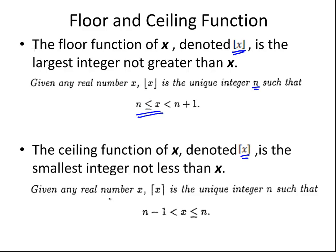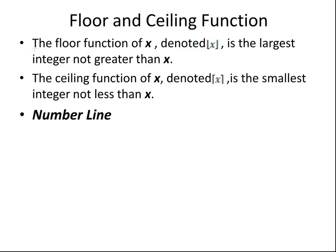Given any real number x, the ceiling function is a unique integer n such that x ≤ n. So n is an integer, meaning floor and ceiling functions always produce integers as outcomes.